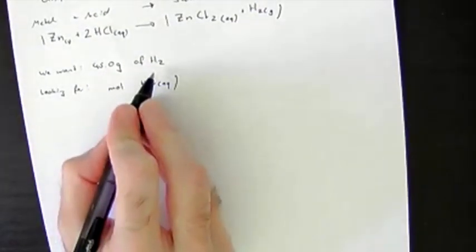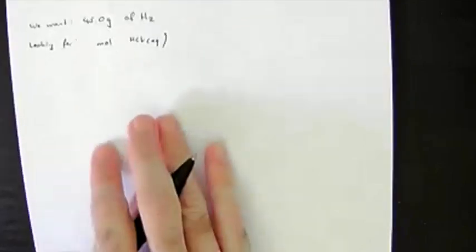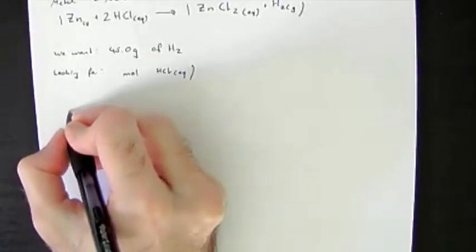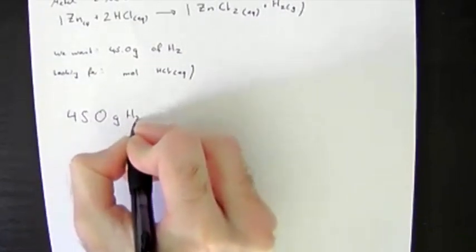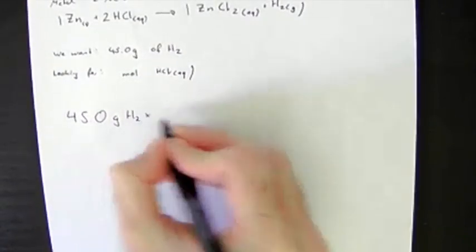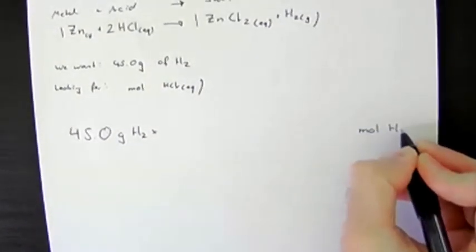We're starting with 45 grams of hydrogen and we want to know how many moles of HCl. So you set this up as a conversion question: 45.0 grams H2, and I want to convert into moles HCl.